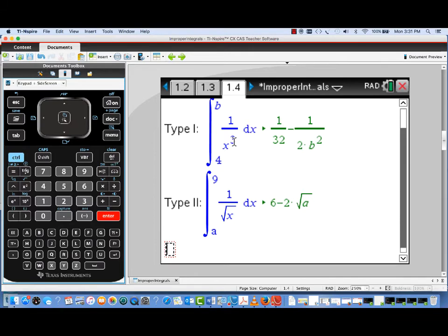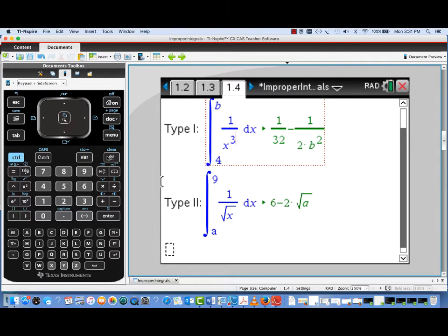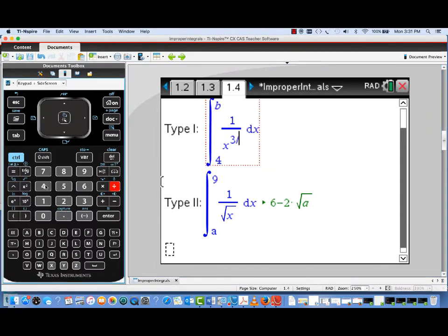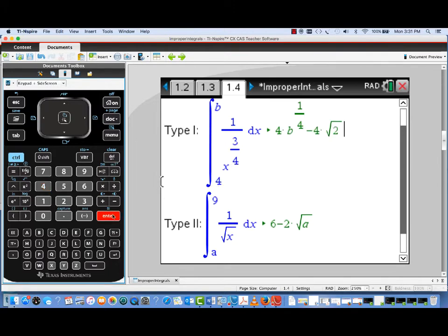Now I'm going to edit these two improper integrals and see a little bit different behavior. So for this Type 1 improper integral, I'm going to edit the power on x from 3 to a power that's less than 1. So we're going to look at 1 over x to the 3 fourths.